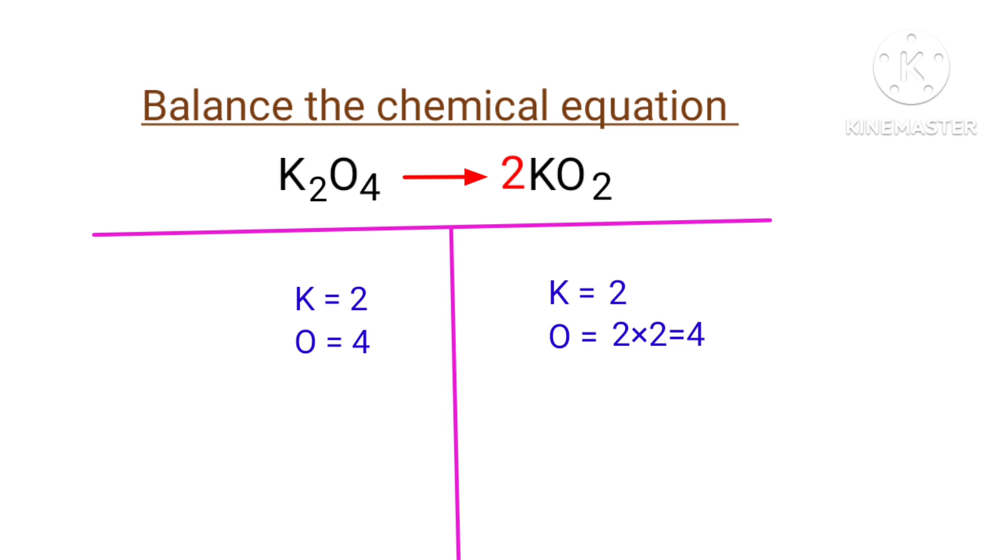The equation is now balanced. There are two potassium atoms and four oxygen atoms on both sides.